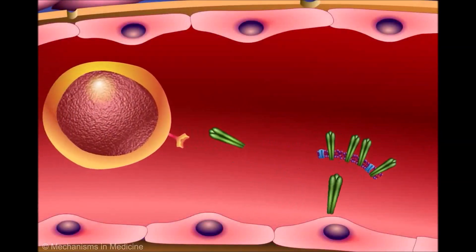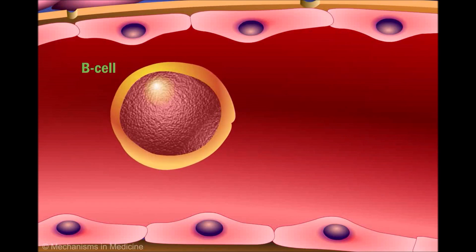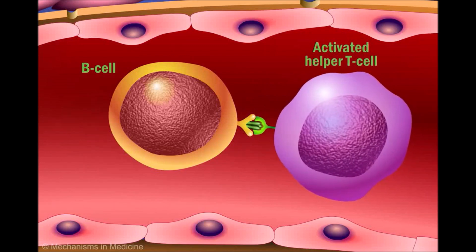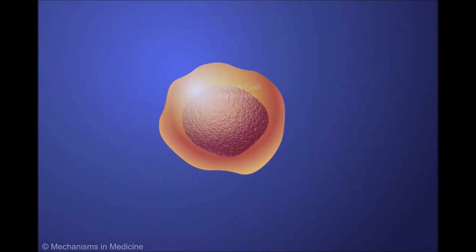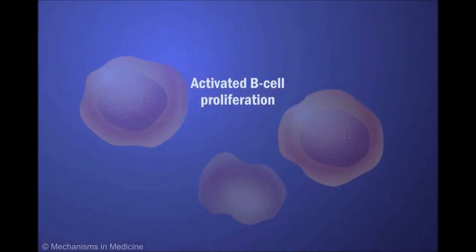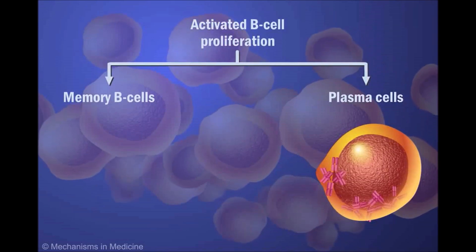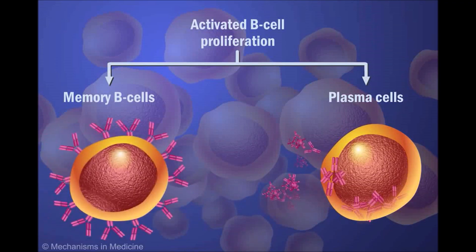Unlike T cells, B cells are able to ingest hemagglutinin independent of the MHC. Once internalized, B cells process the hemagglutinin antigen and present it on their surface in combination with an MHC. When activated helper T cells interact with activated B cells expressing antigen-MHC receptors, they begin secreting lymphokines, which trigger activated B cell proliferation. This leads to either their differentiation into memory B cells or into plasma cells. Plasma cells produce hemagglutinin antibodies specific to the influenza strain in the vaccine, while memory B cells aid in future immune responses when exposed to an active influenza virus.